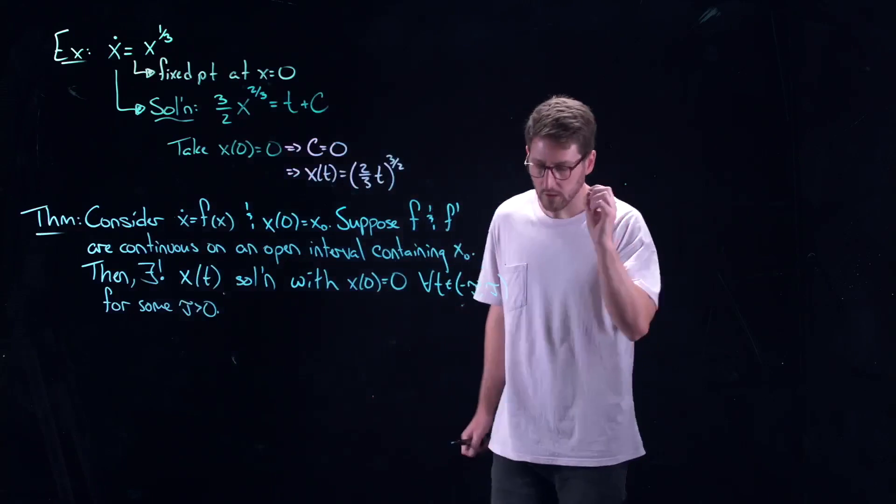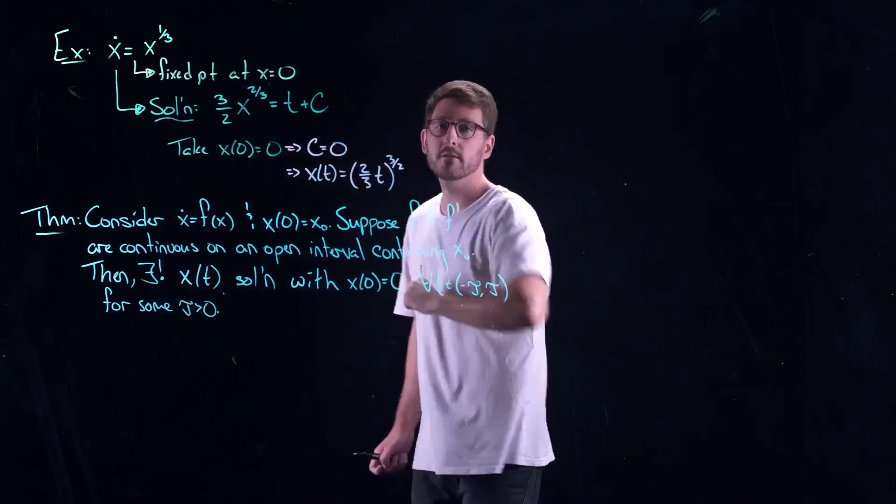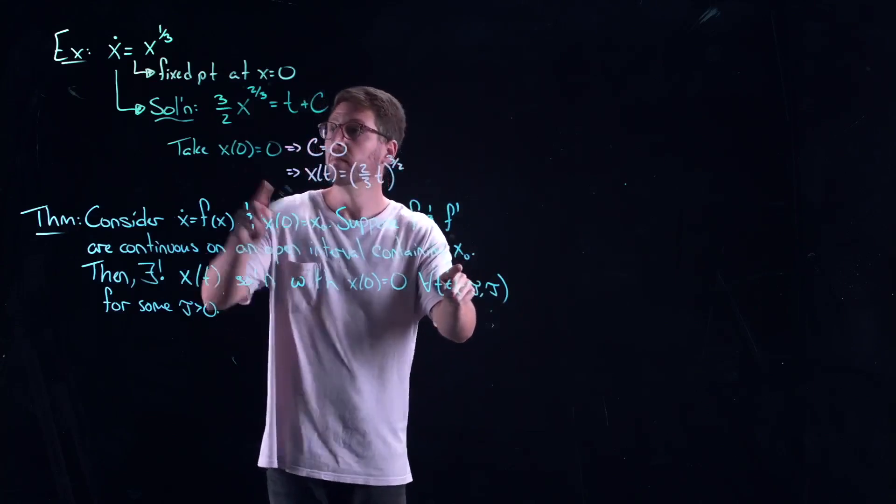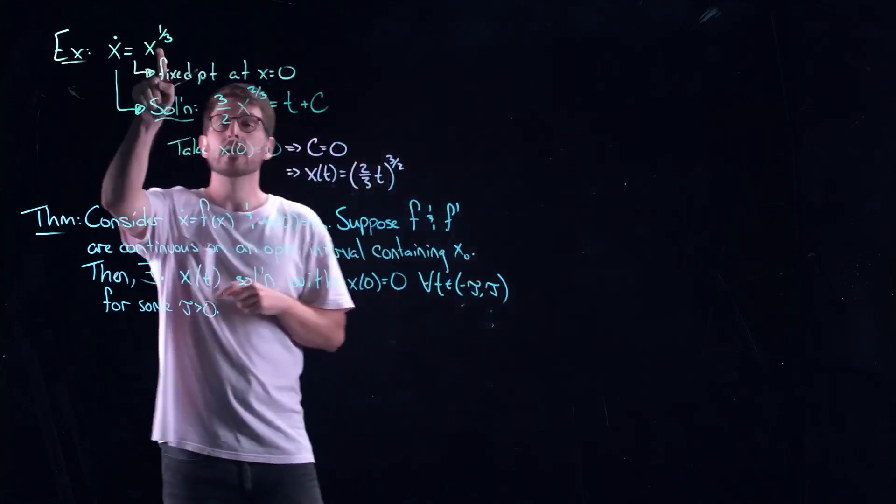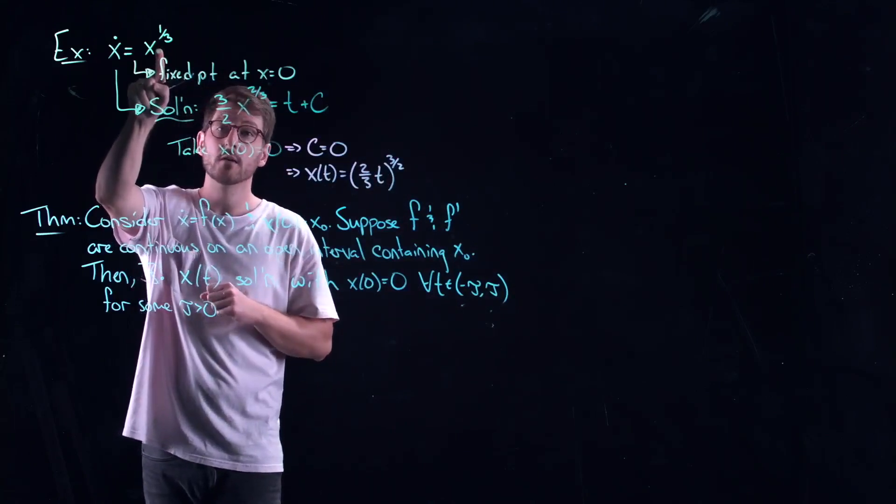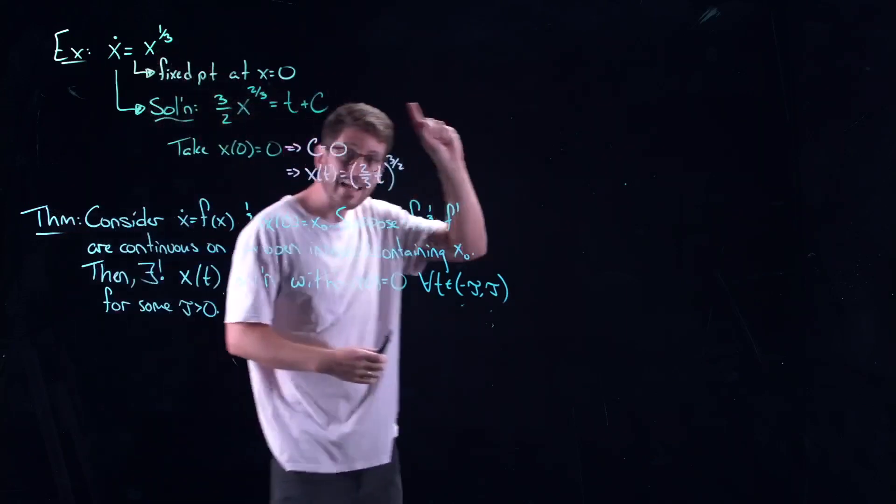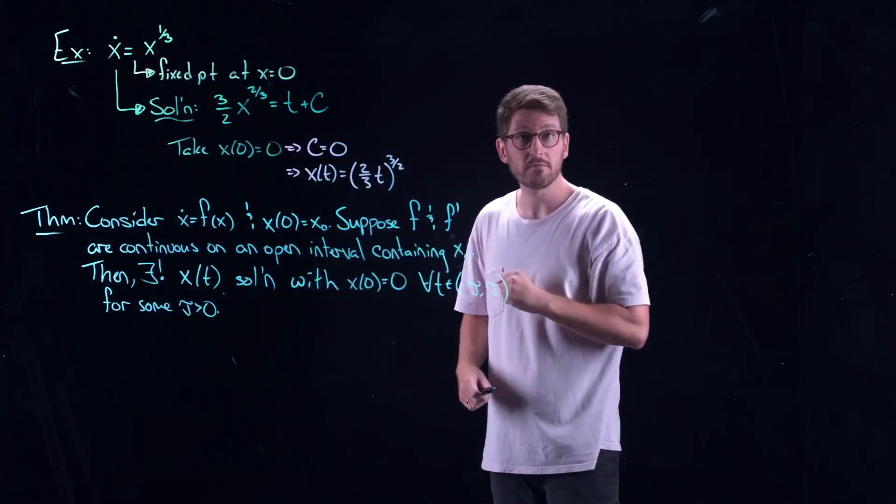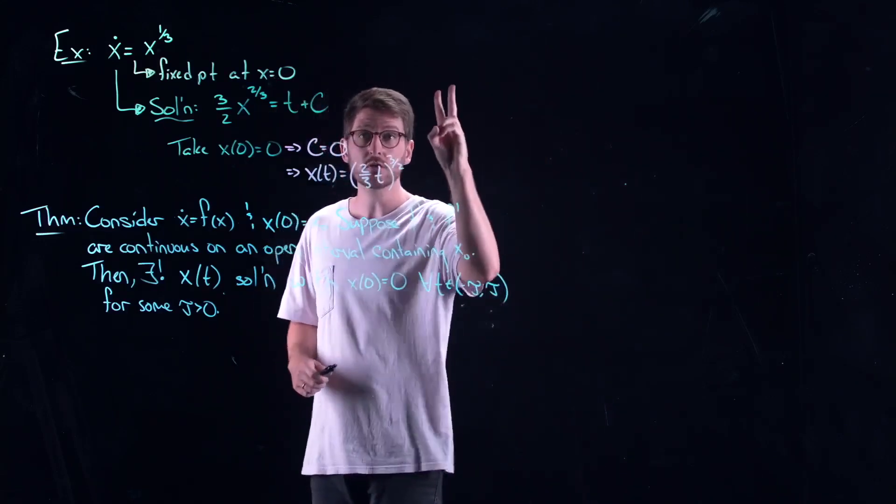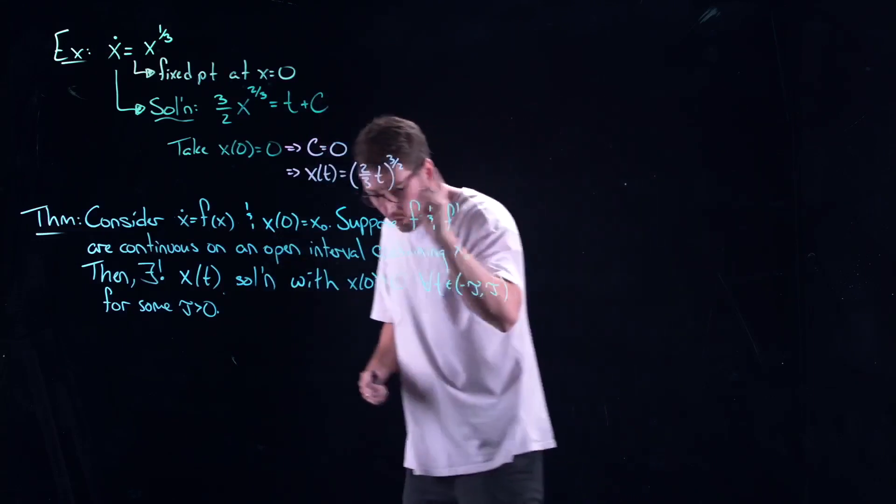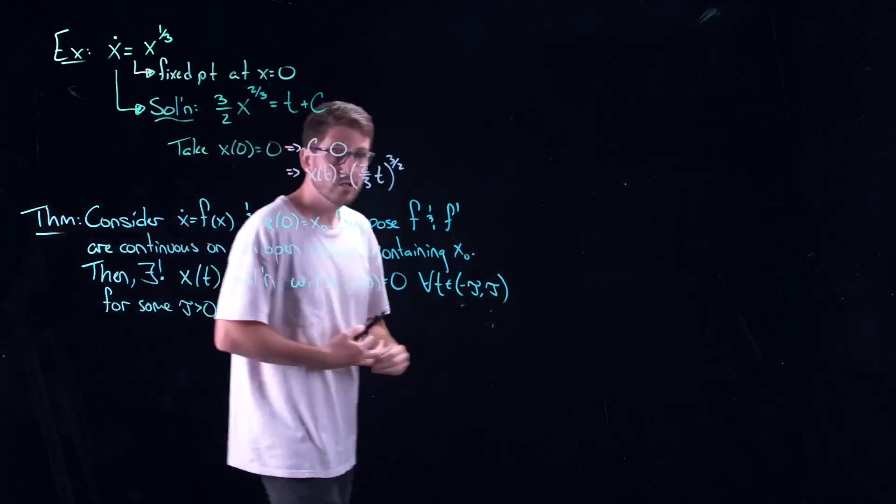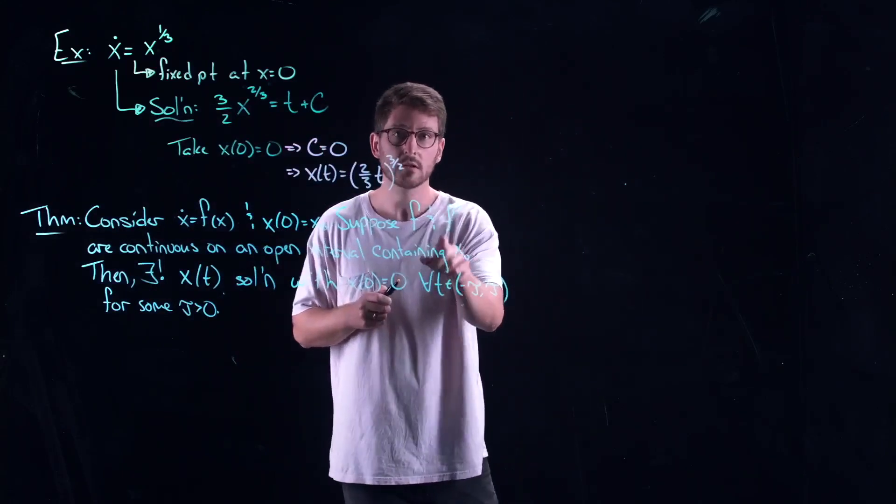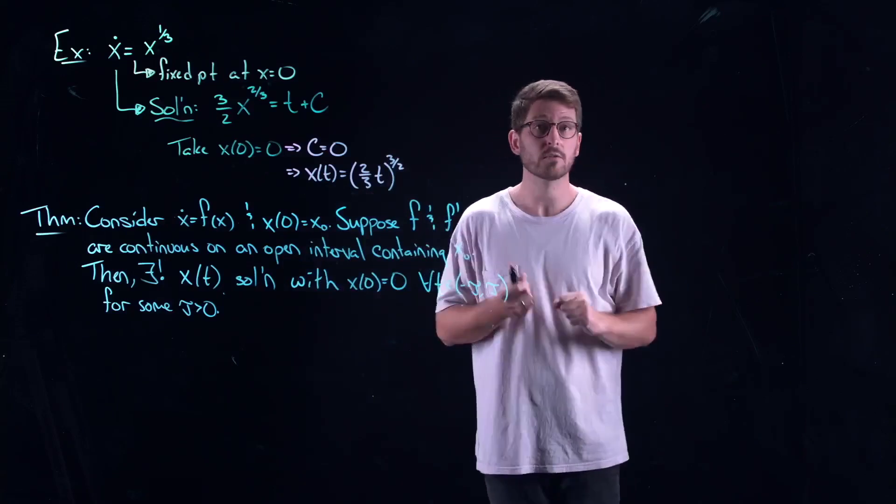The first thing that I want you to put a note of here is where my previous example failed. f and f prime have to be continuous on an open interval containing the initial condition. My initial condition here was 0. The original function f is very much continuous on the entire real line, but its derivative has a negative exponent, negative two-thirds. It's not continuous at zero. That's where the existence uniqueness theorem failed and that's why I got a non-unique solution. I got two solutions. Unique means only one. We can only apply our geometric theory when this existence uniqueness theorem actually applies.